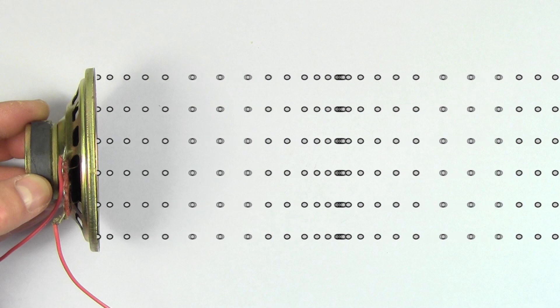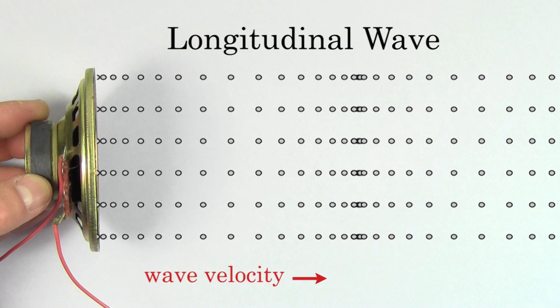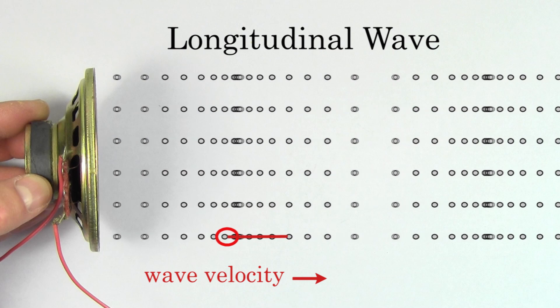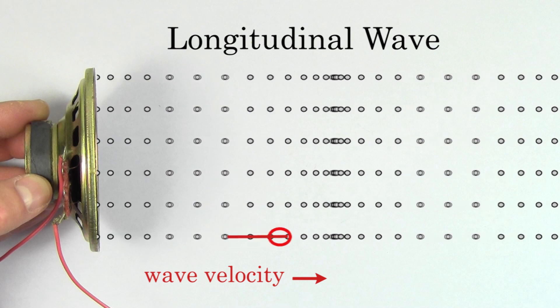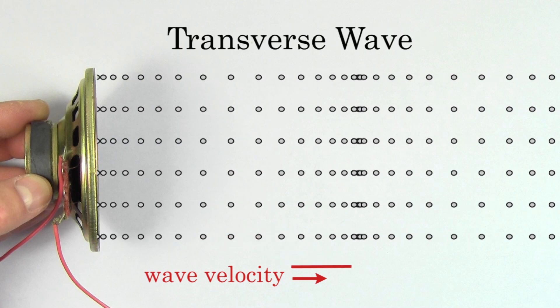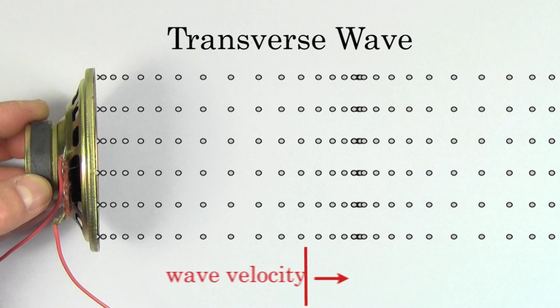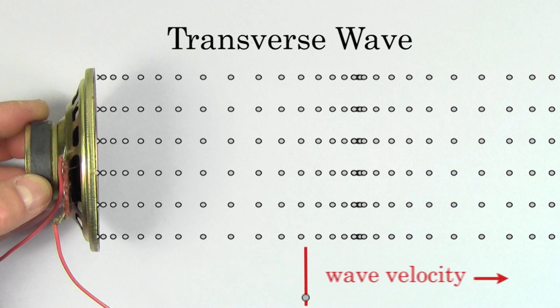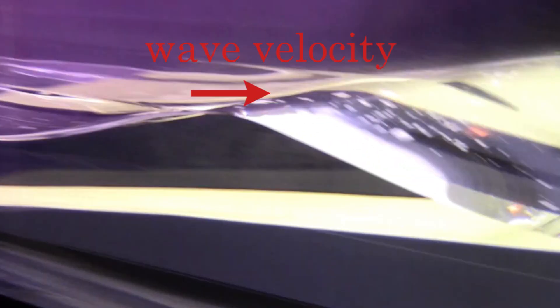We call sound a longitudinal wave because the wave is traveling parallel to the line traced out by the oscillations of the medium. The other type of wave is a transverse wave. Transverse waves happen when the wave velocity points perpendicular to the oscillations of the medium. Waves on a string or waves on the surface of water are examples of transverse waves.